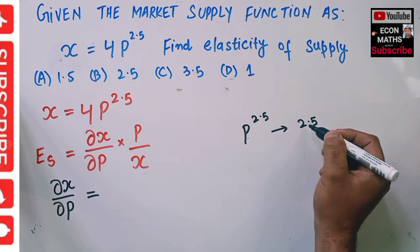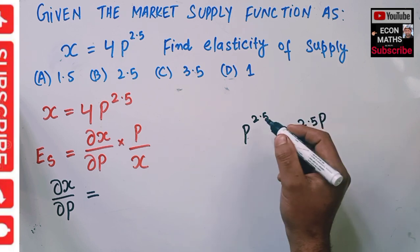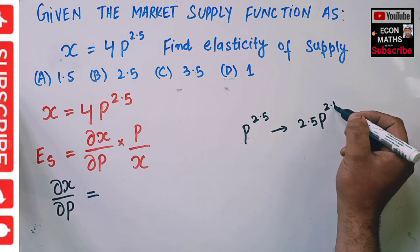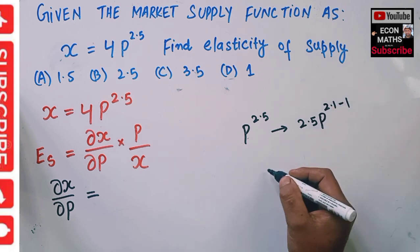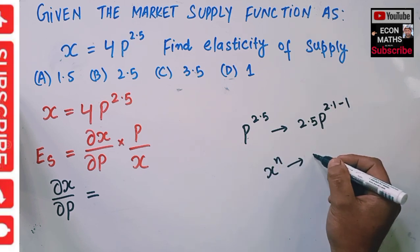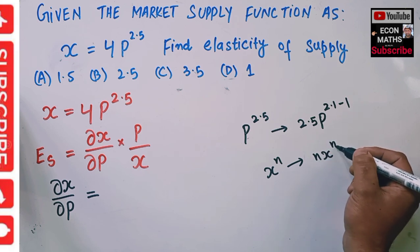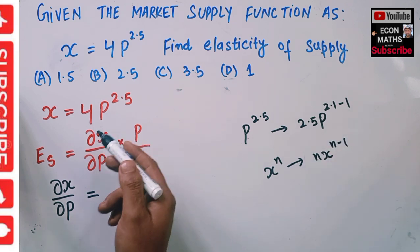This exponent will be subtracted by 1, by the power function rule. If we have x^n, its derivative is nx^(n-1). So here what will happen is we will have 4 × 2.5 × P^(2.5-1).